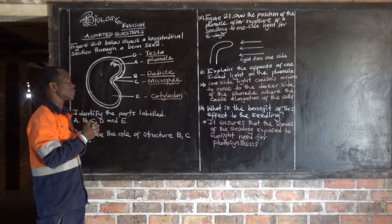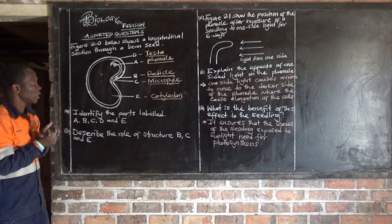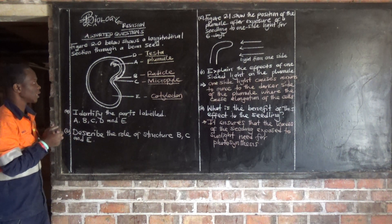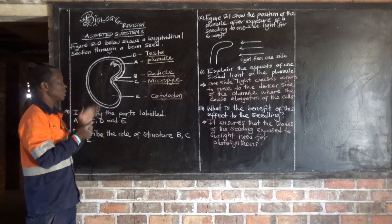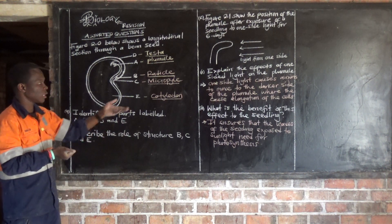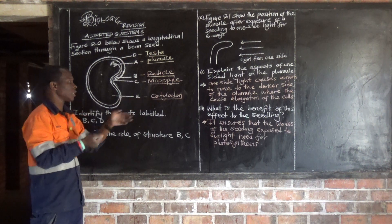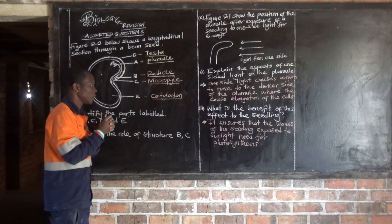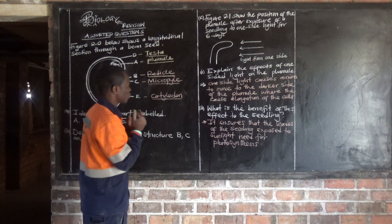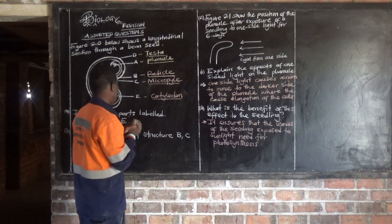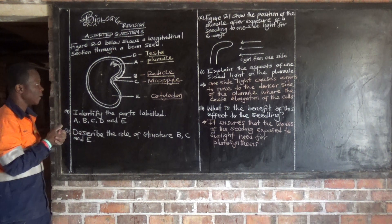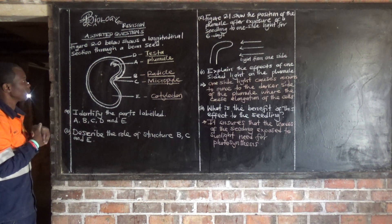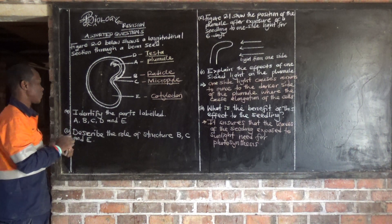The micropyle is just a small pore through which water enters the seed. The cotyledon stores food and enzymes. So these are the functions of these parts.